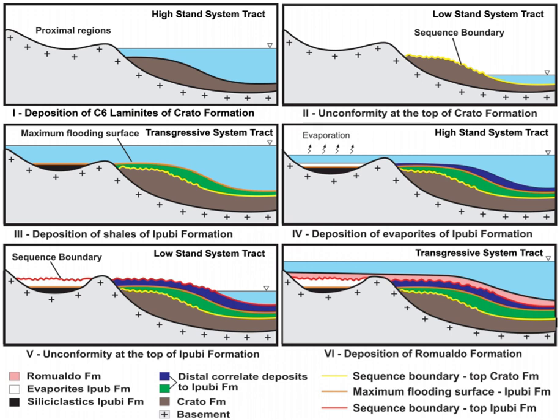Continental: Alluvial; Aeolian – processes due to wind activity; Fluvial; Lacustrine transitional. Deltaic – silt deposition landform at the mouth of a river.